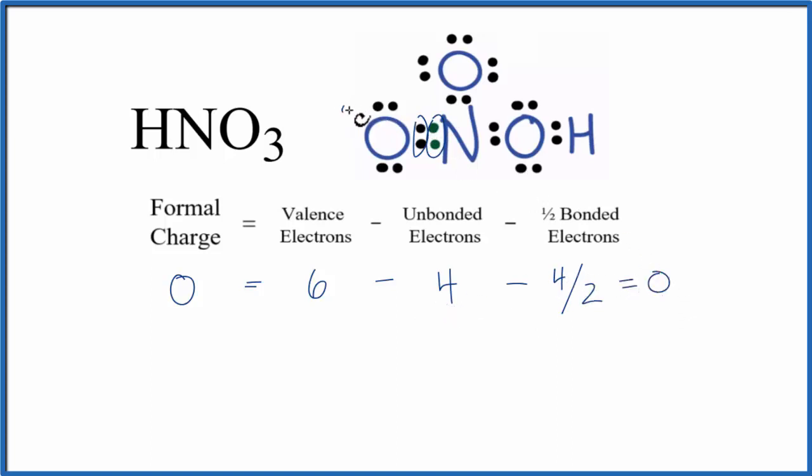So the formal charge on this oxygen is 0. Next, let's do this oxygen up here. Again, oxygen has 6 valence electrons. Subtract the unbonded - 2, 4, 6 of those. And then the bonded, 2. So minus 2 over 2. That gives us 6 minus 6, 0 minus 1. Negative 1 formal charge on this oxygen.